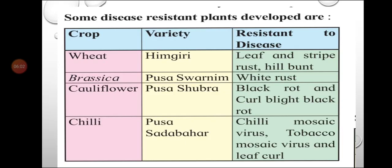From an exam point of view, questions from this table can be asked in several ways: name the wheat variety resistant to diseases (answer: Heemgiri), name the crop with variety Pusa Swarnim (answer: Brassica), or questions may be asked as match-the-column or complete-the-table. So read and memorize this table carefully.